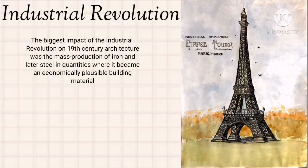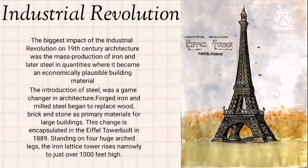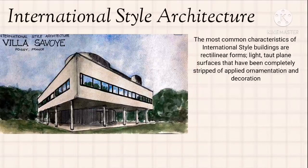The biggest impact of the Industrial Revolution on 19th-century architecture was the mass production of iron and later steel. The production of steel opened opportunities for previously impossible building materials. Forged iron and milled steel began to replace wood, brick, and stone as primary materials for large buildings. This change is encapsulated in the Eiffel Tower, built in 1889. Building on four huge arch legs, the iron lattice tower rises narrowly to just over 1,000 feet high. The Eiffel Tower is located in Paris, France.